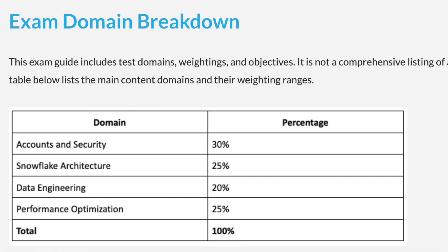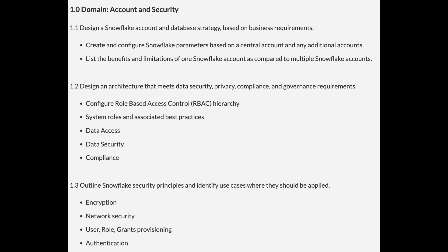The four domains you're going to be tested on are: Accounts and Security, which makes up the bulk at 30% of the testing score; Snowflake Architecture at 25%; Data Engineering at 20%; and Performance Optimization at 25%. Let's get into things, starting with the Accounts and Security section — the largest one.